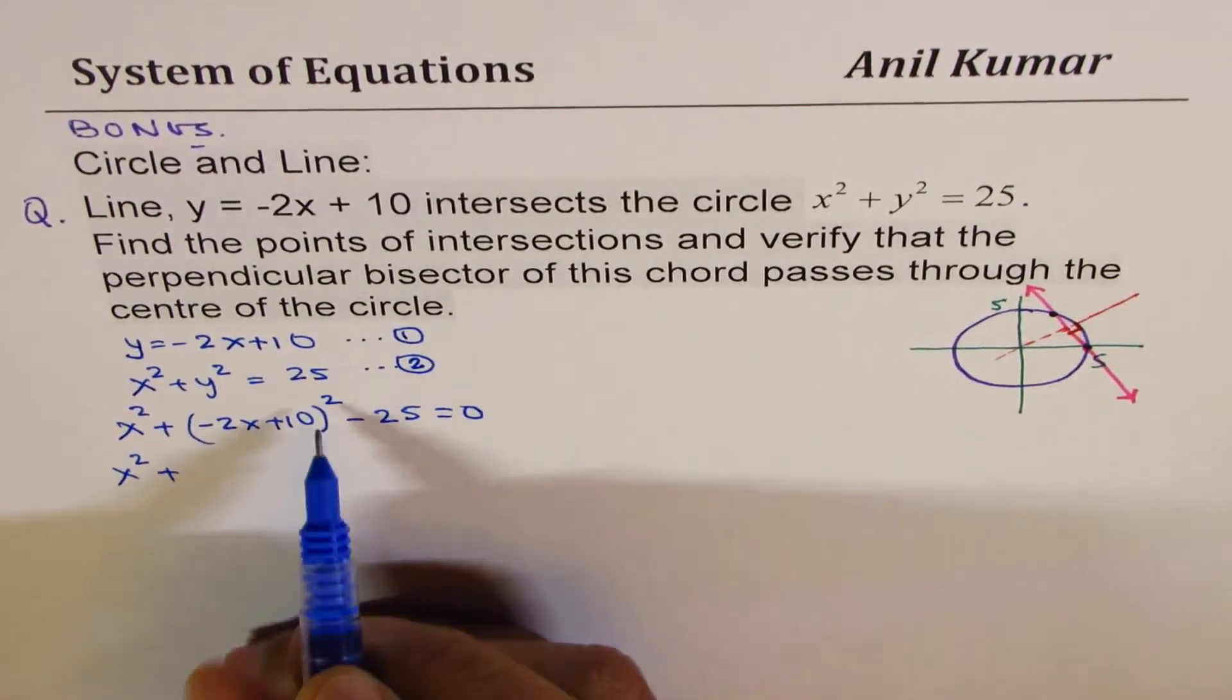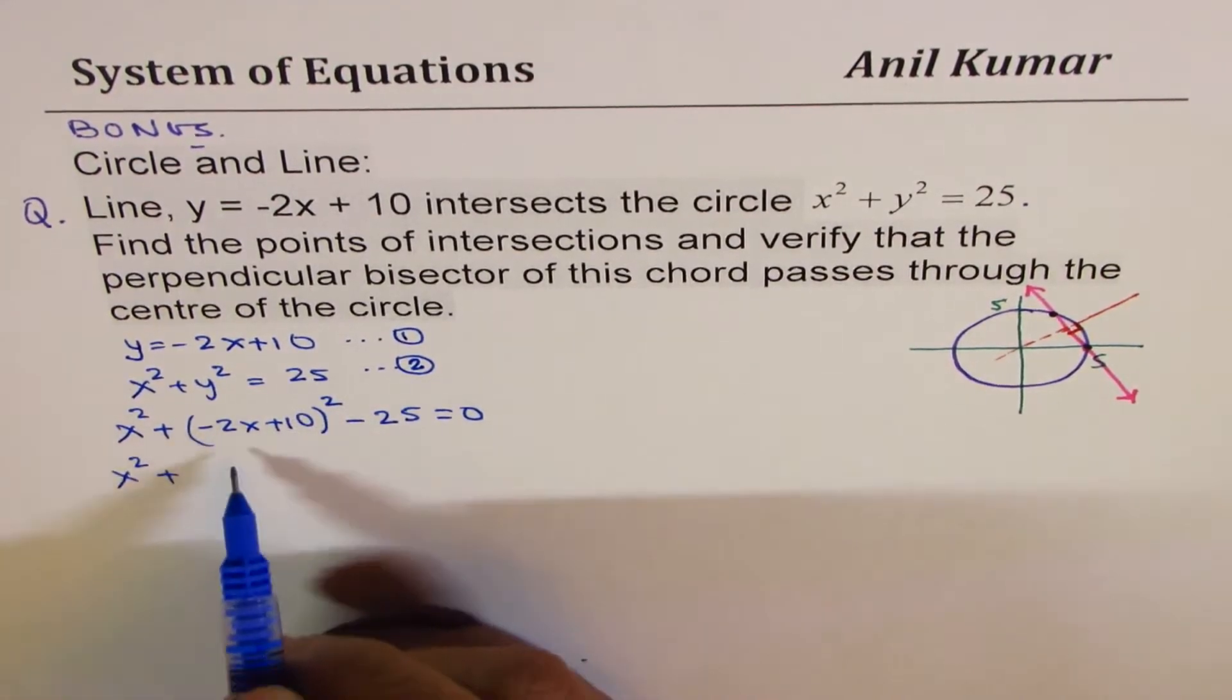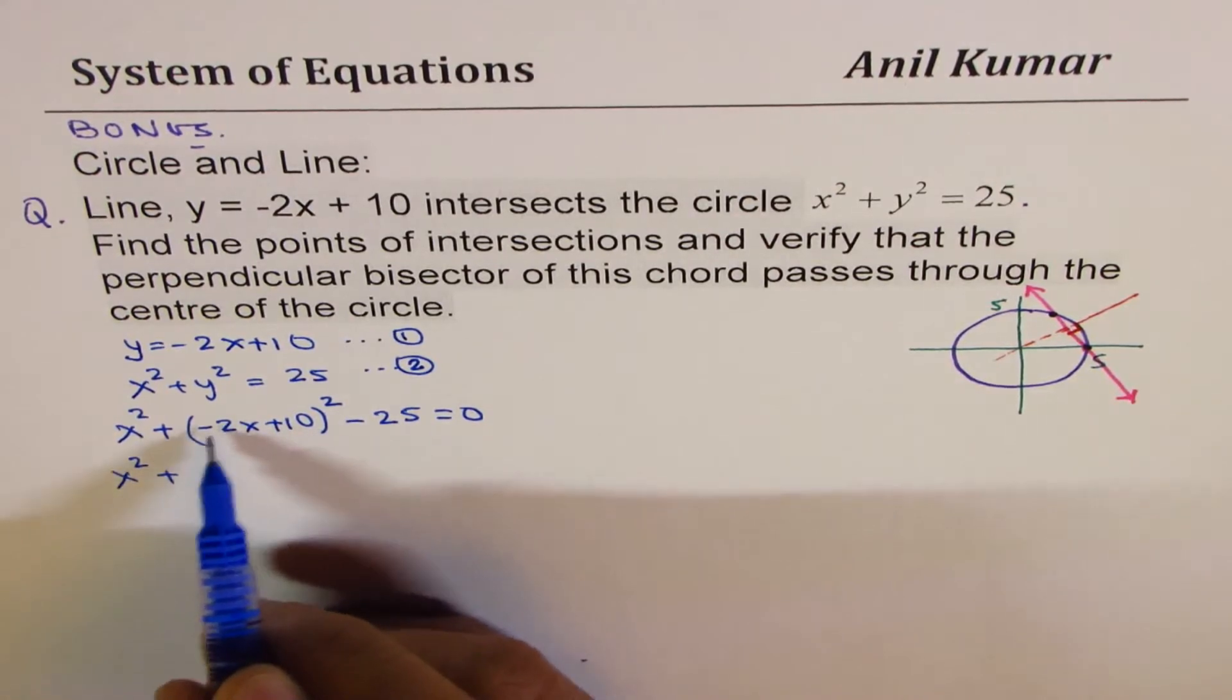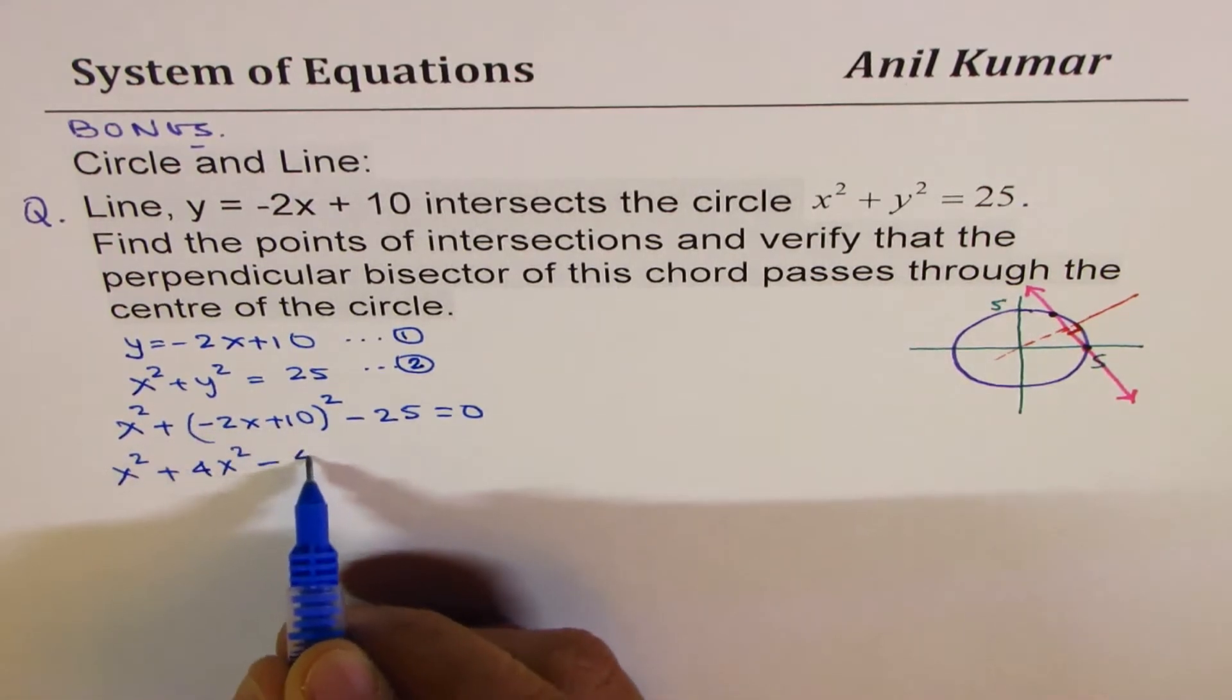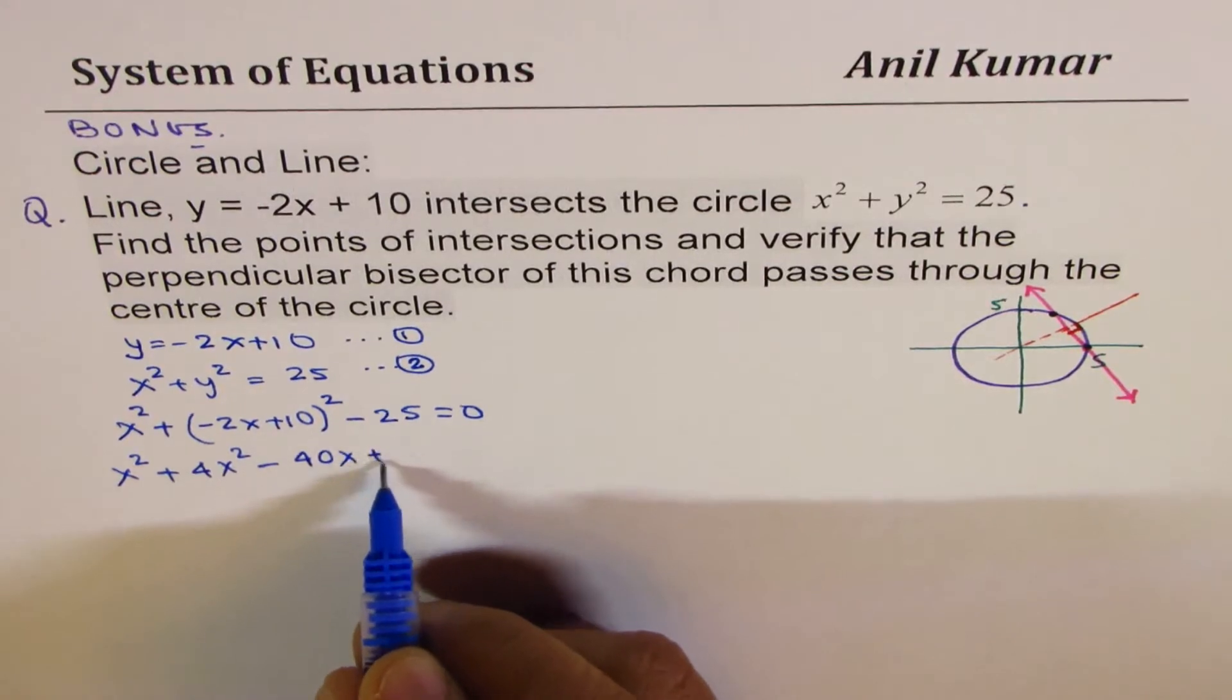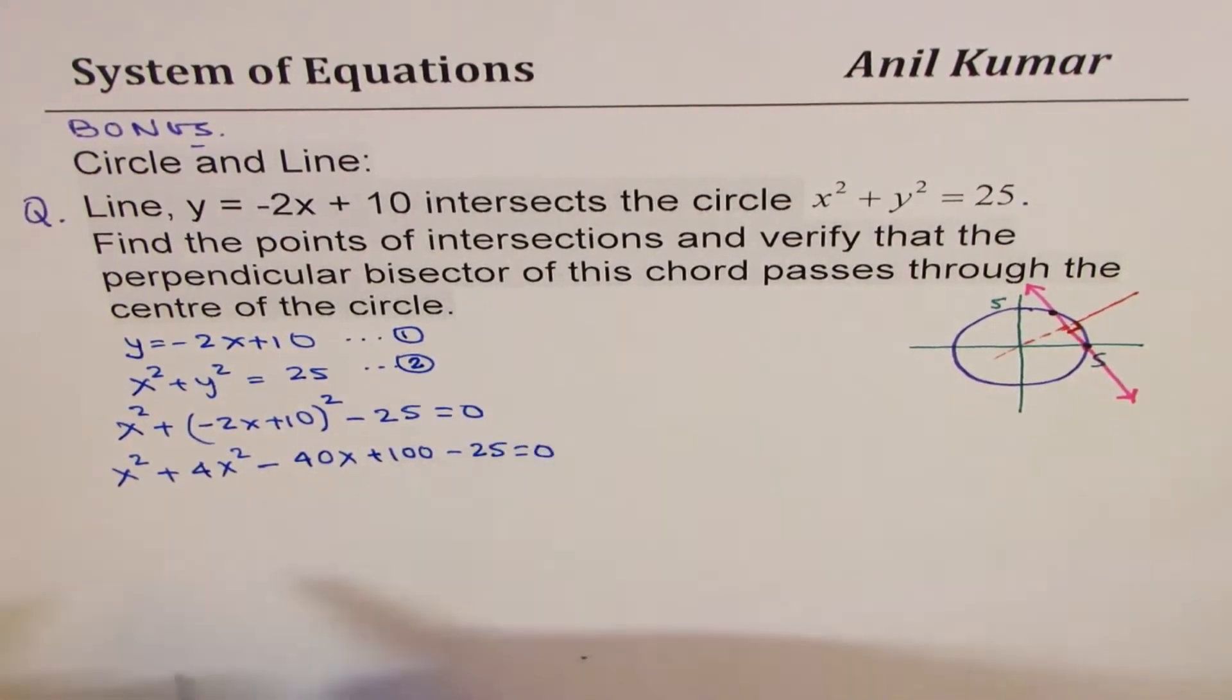So we get x squared plus, treat this as 10 minus 2x, correct? So like a minus b whole square. When you expand, you get square of the first term, which is 4x squared, minus twice ab, that means 40x, and then square of the second term, which is plus 100. And then we have minus 25 equals 0.